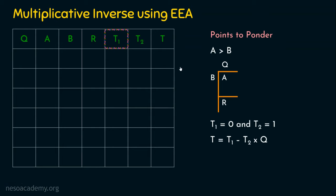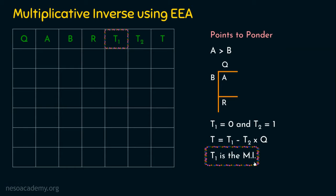After completing the iterations, you will encounter a situation where you cannot proceed with the algorithm further. In that case, whatever is there in T1 — that is going to be the multiplicative inverse. When you find a situation where you cannot proceed with the division further, whatever is there in T1 is the multiplicative inverse you are looking for. Let's see the example now.